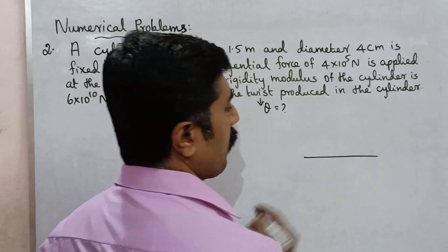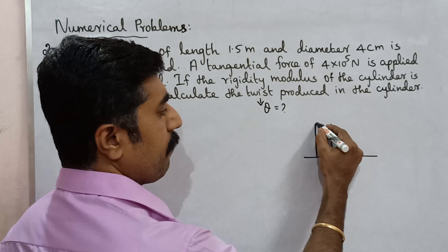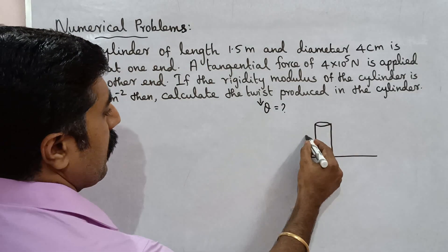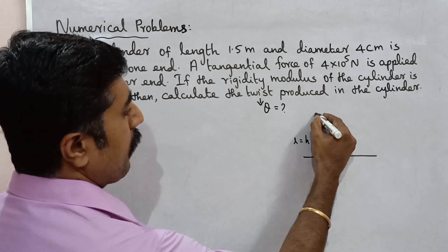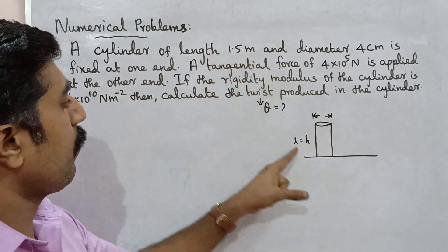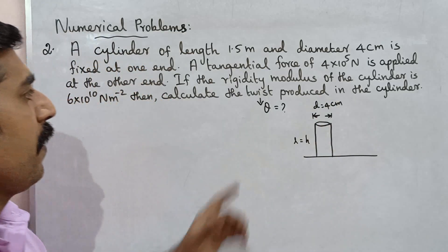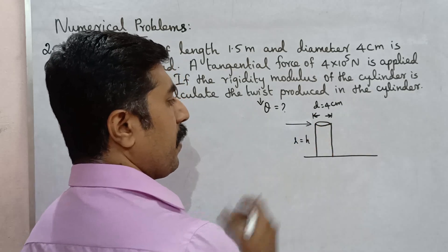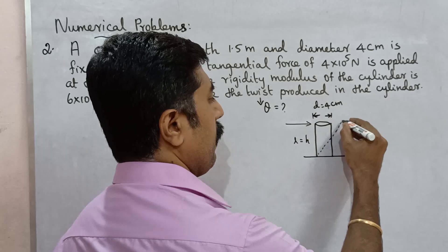First, let's look at the cylinder. This cylinder has a total length — length L. The diameter is on one side, and diameter on the other side — diameter D is equal to 4 centimeter.